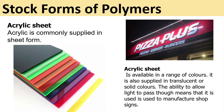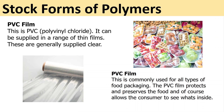Stock forms of polymers. Acrylic sheet is commonly supplied in sheet form and available in a range of colors, including translucent — which allows light to pass through — or solid colors. The ability to allow light to pass through means it is used to manufacture shop signs. PVC (polyvinyl chloride) film can be supplied in a range of thin films, generally supplied clear. PVC film is used for all types of food packaging, protecting and preserving the food while allowing the consumer to see it inside.